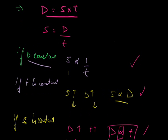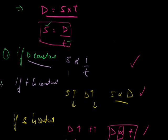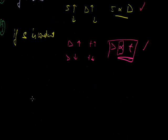In total, distance equals speed into time, or speed equals distance upon time. I have three parameters: speed, distance and time. I have considered three cases in which one of the three is constant and the relationship between the other two — how they increase or decrease depending on each other.